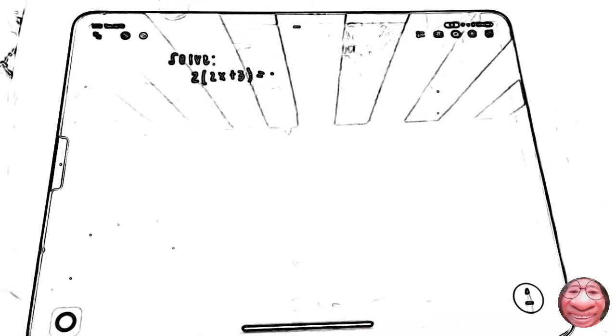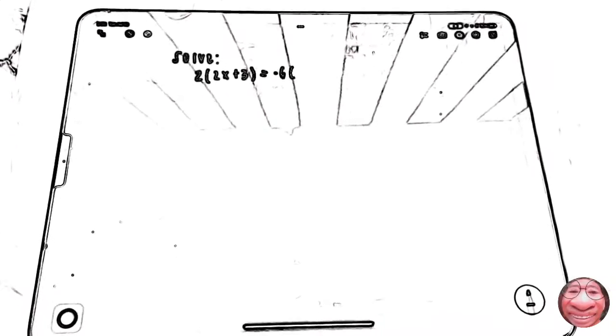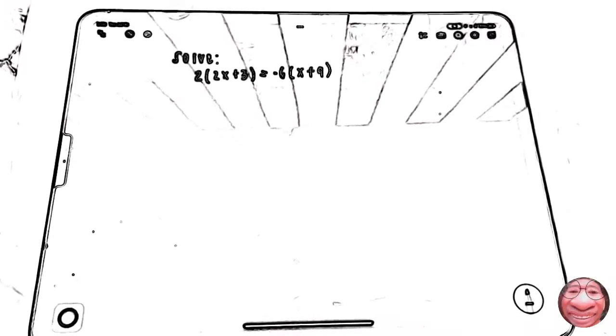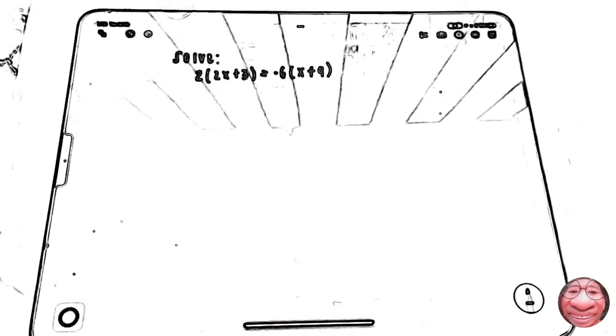Now, let's find your x. Now, here is our equation: 2 times 2x plus 3 equals to negative 6 times x plus 9.